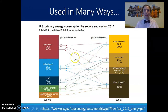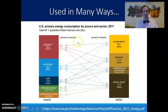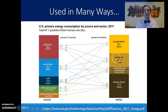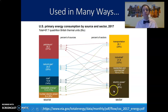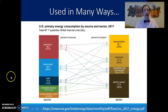Energy is used in many different ways. Petroleum is used primarily for transportation — 92 percent of transportation comes from petroleum. Natural gas is typically used in industrial, residential, and commercial settings for heating homes, and now more recently for electric power. Coal is primarily used for electric power, and so on.